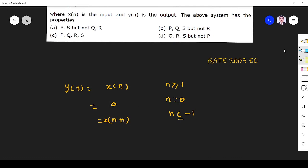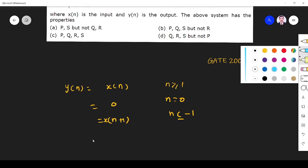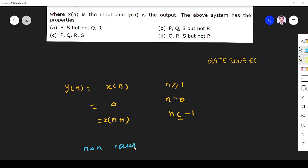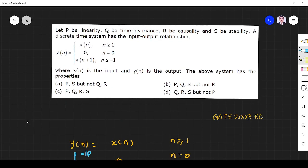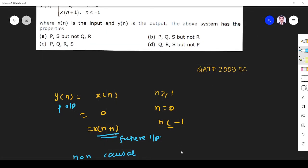First, let us see by examining the system equations we can identify this is a non-causal system. Why is it non-causal? Because present output depends on future input. So present output depends on future input means it is non-causal. So R is causality, therefore R is not.